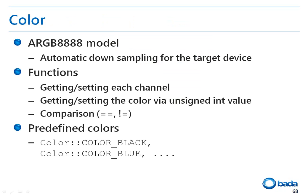Although I have briefly mentioned this before, let's now take a look at Bada's color functions in more detail. Bada uses the ARGB Quad 8 color model, meaning that the alpha channel is supported and each RGB channel consists of 8 bits. The color class supports functions to get or set each channel value or all ARGB Quad 8 colors. In addition, the class supports a function to compare colors, and the color class pre-defines frequently used colors for convenience.